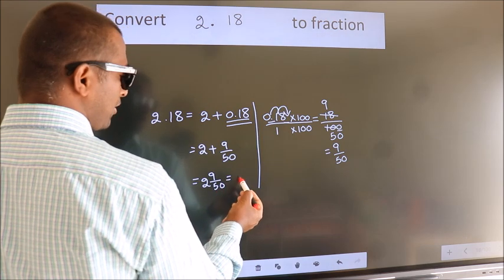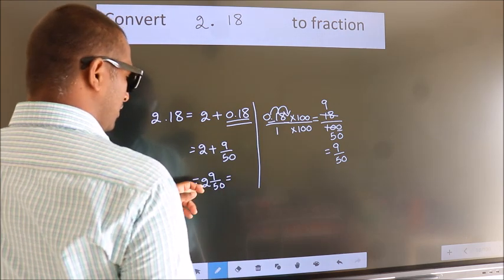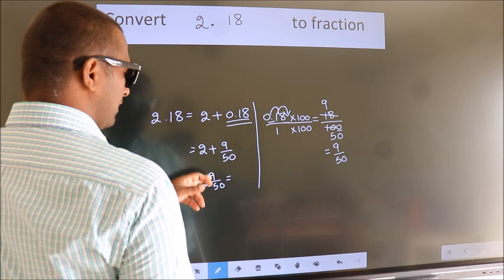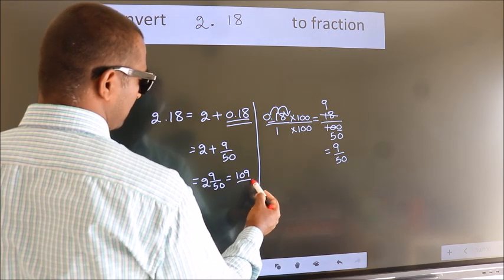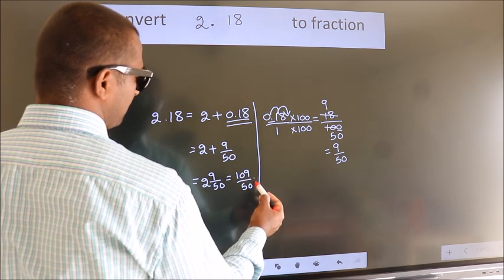And in improper fraction it is 2 into 50, 100 plus 9. 109 by 50 is our fraction.